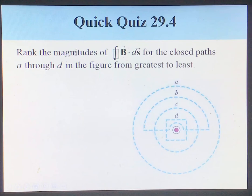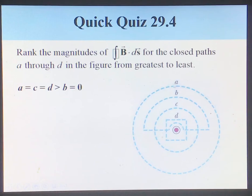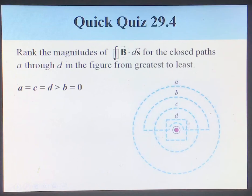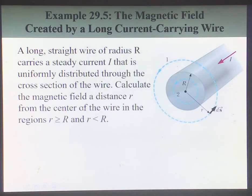Now let's look at Quick Quiz 29.4. Ranking the magnitudes of the line integral of the magnetic field over each path: A = C = D > B, and B equals zero. Path A contains a current coming out of the paper. Path B doesn't contain any current, so the line integral is zero. Path D is a rectangular path that contains the current, so its integral equals mu-naught times the current, same as A and C.